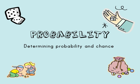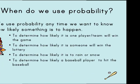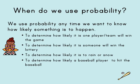Hi! Today we're going to be talking about probability. Probability is a measure that we use to tell how likely an event or an outcome is. For example, if you've ever watched a weather report on TV, you might have heard the weatherman say something like, there's a 10% chance of rain today. We use probability any time we want to know how likely something is to happen.